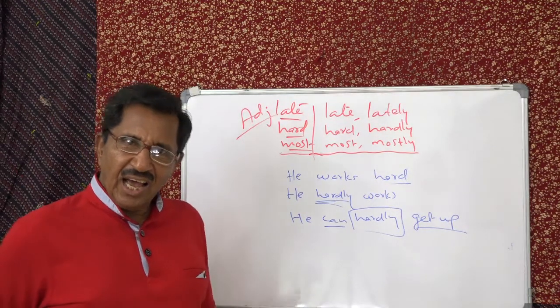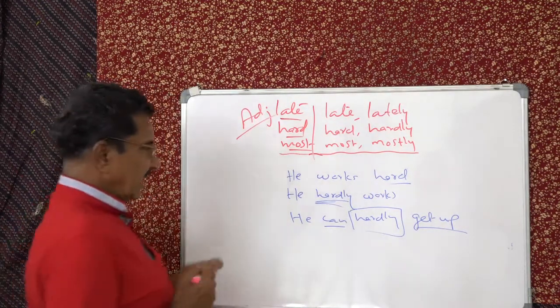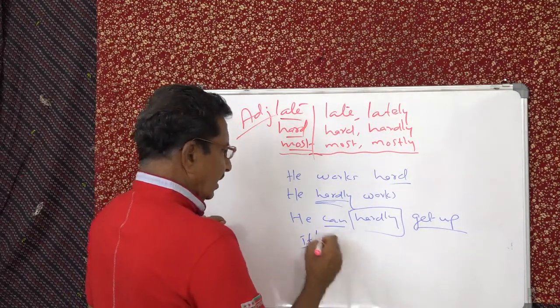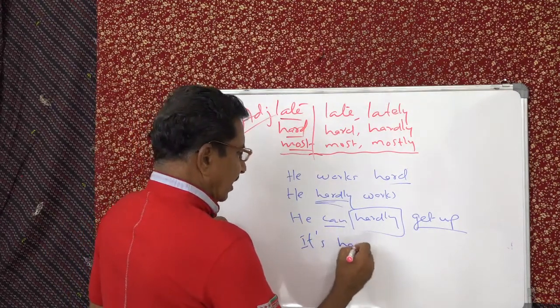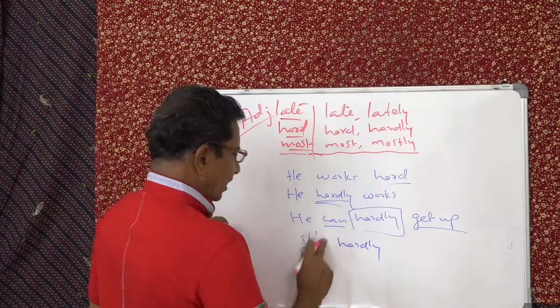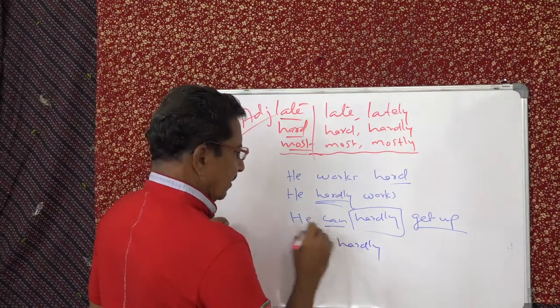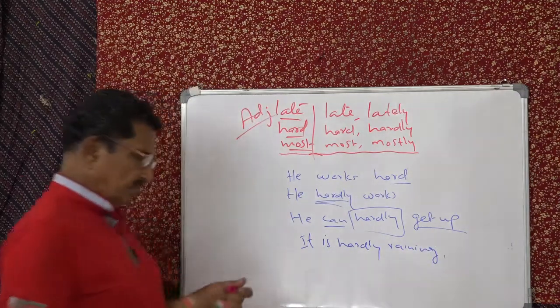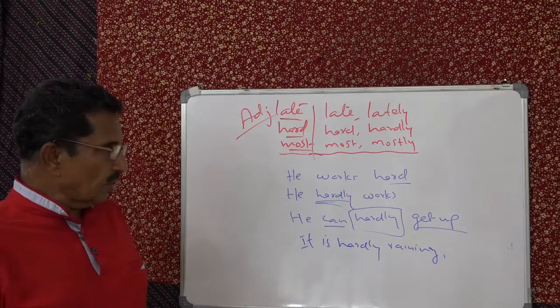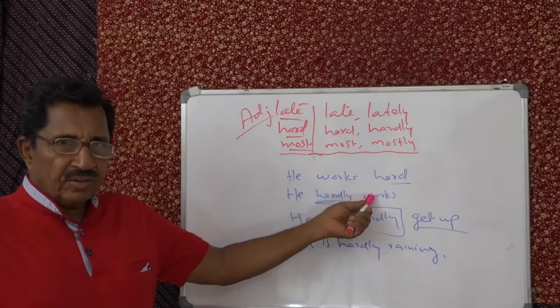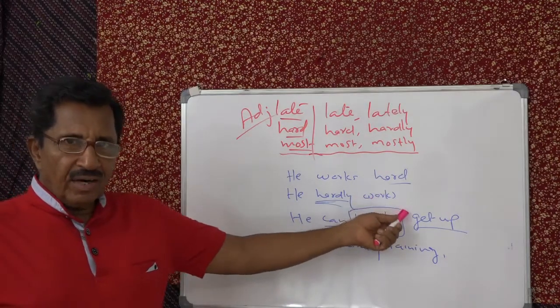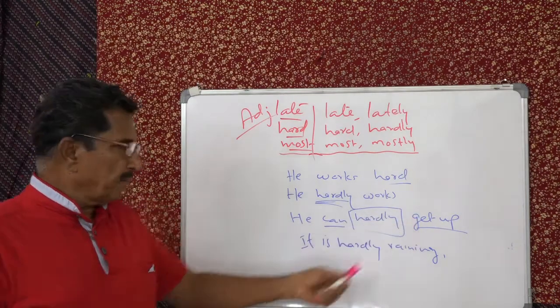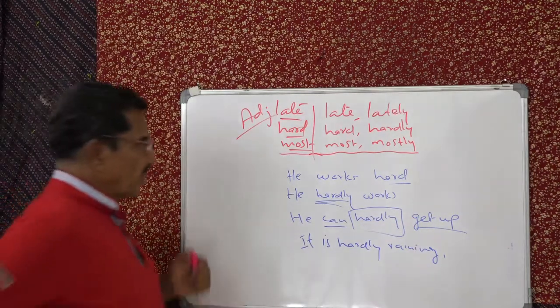He hardly writes anything. He hardly listens. Doesn't listen. He's always looking around, enjoying the beauty of nature. I mean he hardly attends. Used before verbs. This is a simple verb. And this is in between if it's a compound verb.